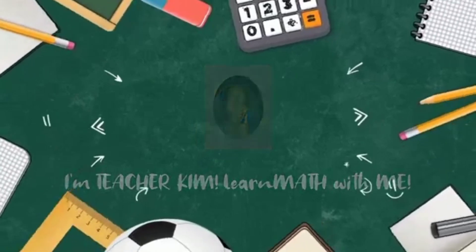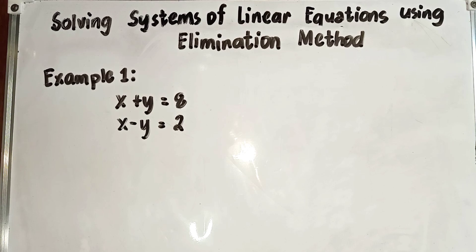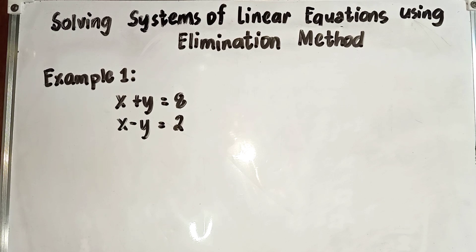We are done solving systems of linear equations using substitution method. Now let's proceed to solving systems of linear equations using elimination method. The elimination method is based on the addition property of equality — when equal quantities are added to both sides of an equation, the resulting equations are equal. We have here example number 1.